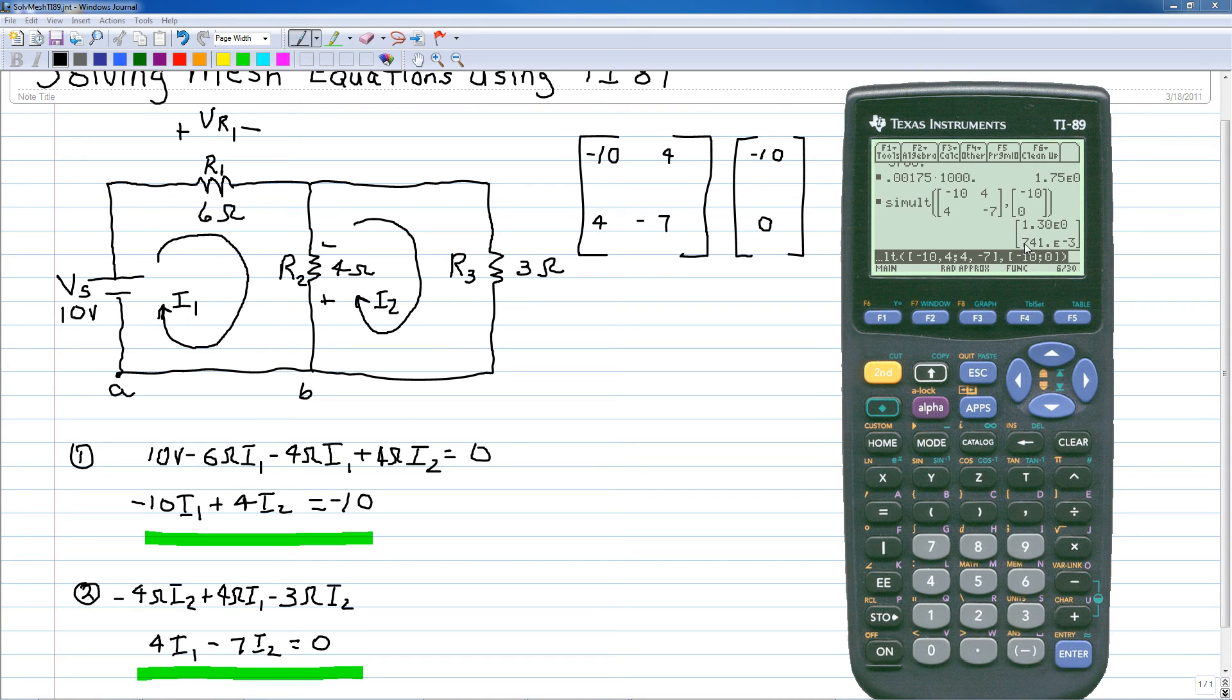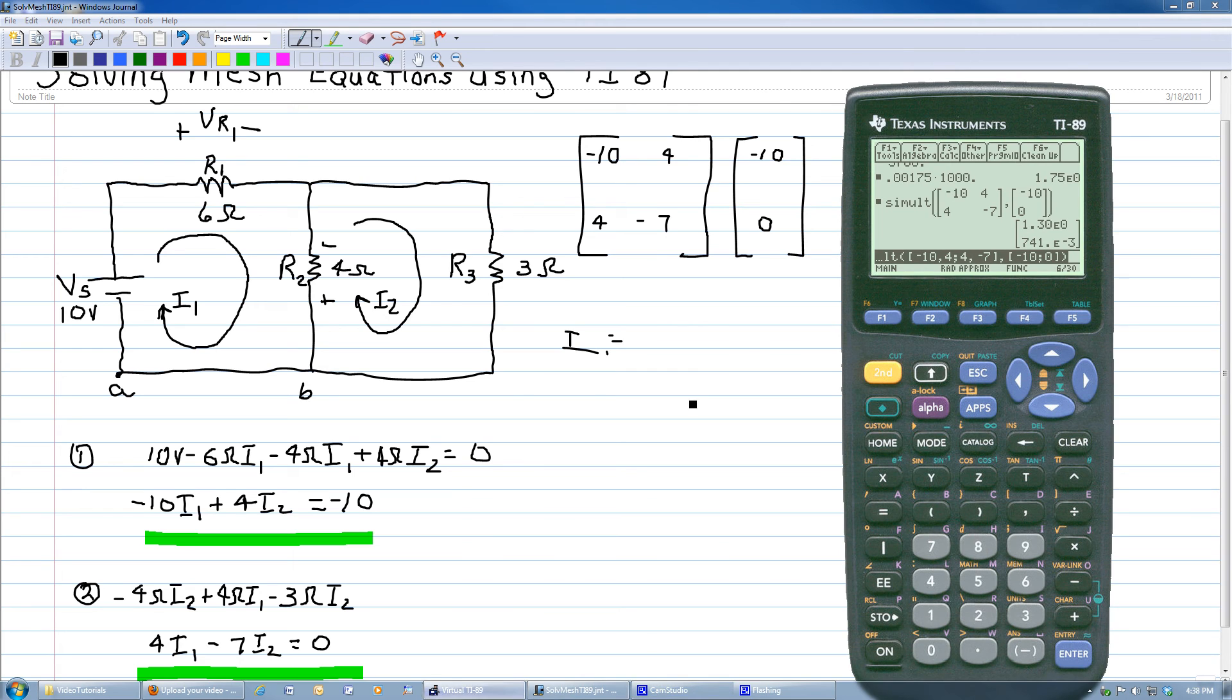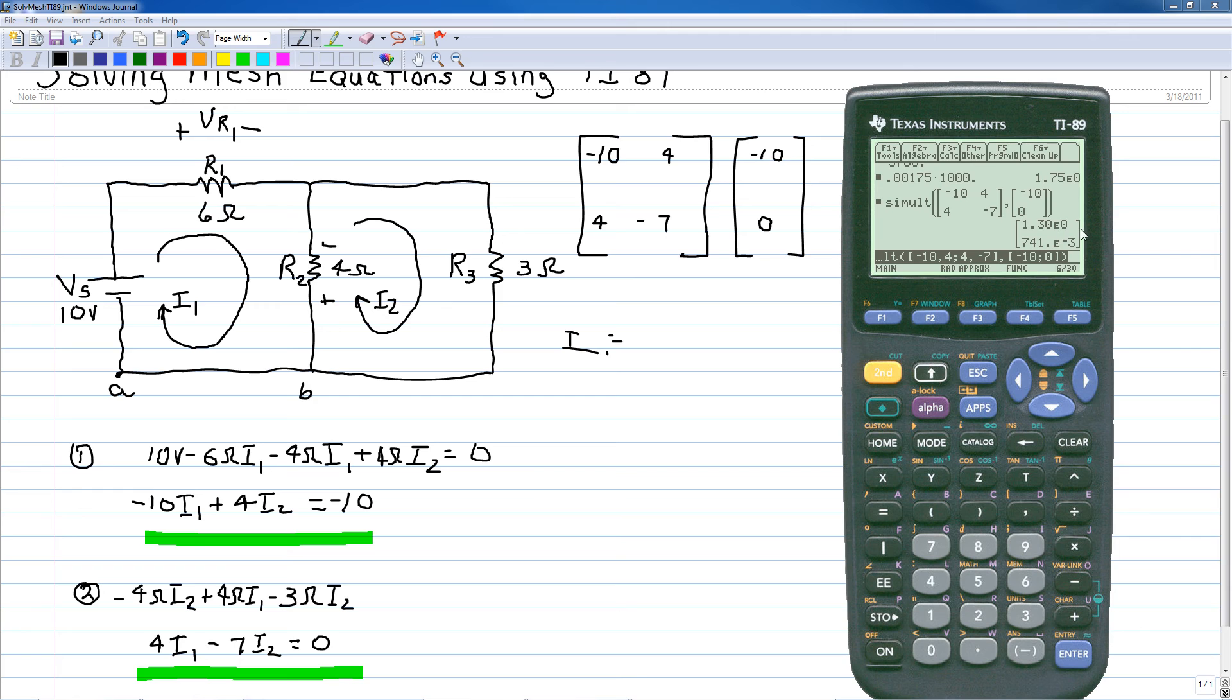And you can see that our solution is - the solution is I1 is equal to, we'll bring that calculator back up, I1 is equal to 1.3 amps and I2 is equal to 741 milliamps.